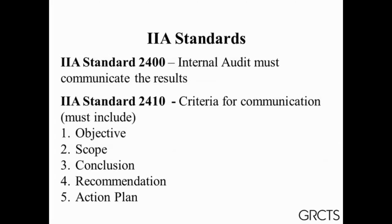IIA Standard 2410 talks about the criteria for communicating the results. In that criteria, it says your report or communication must have five things: the audit objective, the audit scope, the conclusion, and if there are findings, recommendations and an action plan. Numbers three, four, and five are where this webinar is going to be focused.